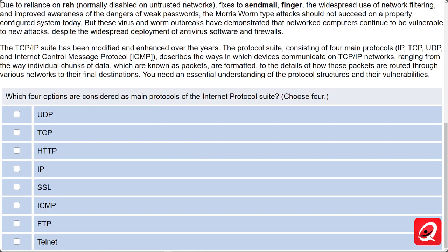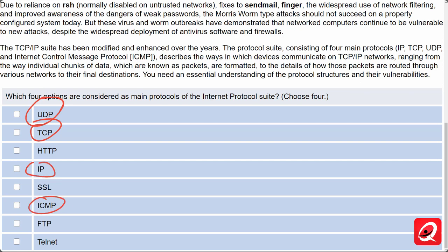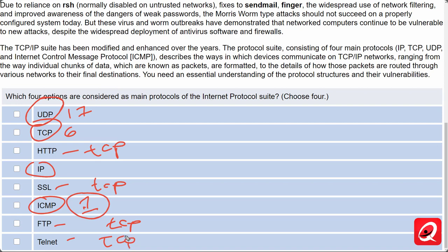The four main protocols of the Internet Protocol Suite are TCP (Transmission Control Protocol, protocol number 6), UDP (User Datagram Protocol, protocol number 17), IP (layer 3, no protocol number listed), and ICMP (also layer 3, protocol number 1). HTTP, SSL, FTP, and Telnet are application layer protocols that run over TCP, which then runs over IP.